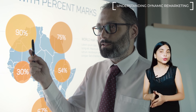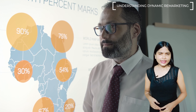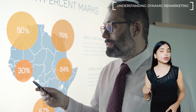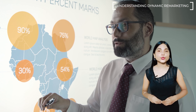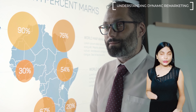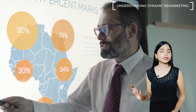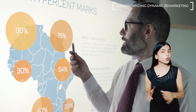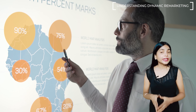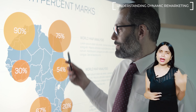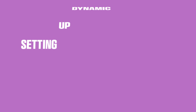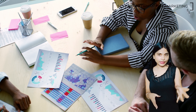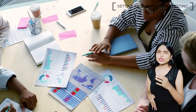Dynamic remarketing takes traditional remarketing to the next level by dynamically tailoring ads to individual users based on their past interactions. It allows you to create highly personalized and relevant ads that showcase the specific products or services that users have previously shown interest in. With dynamic remarketing, you can display ads that feature the exact products a user viewed or added to their cart, even after they have left your website. This level of personalization not only catches their attention but also increases the chances of converting by reminding them of what they were interested in.